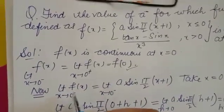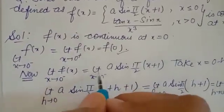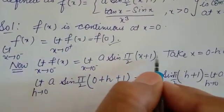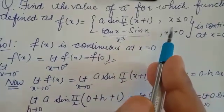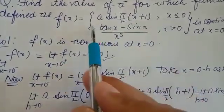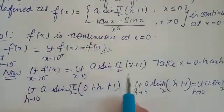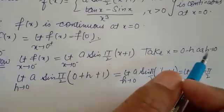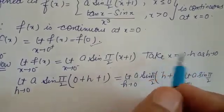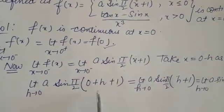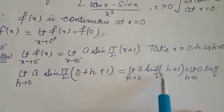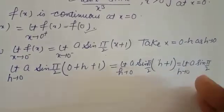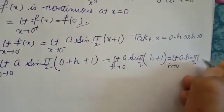Now we are finding the left-hand limit. The left-hand limit as x tends to 0 of f(x) equals the limit as x tends to 0 of a·sin(π/2·x + 1), since x < 0 applies here, we use this function. Taking x = 0 − h as h tends to 0, this expression becomes a·sin(π/2·(0 + h) + 1).